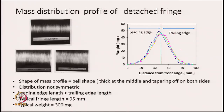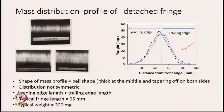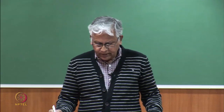The result is the actual mass distribution profile of a detached fringe. The shape of the mass profile is very close to a bell shape — thick at the middle and tapering off on both sides. The weight is maximum at the center and gradually reduces toward the right-hand side and the left-hand side. Most of the mass is concentrated at the center, with the front and back ends gradually reducing. The distribution is not really symmetric — the leading edge length is slightly greater than the trailing edge length.